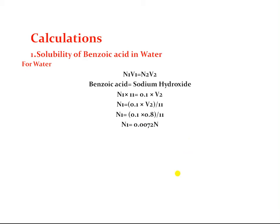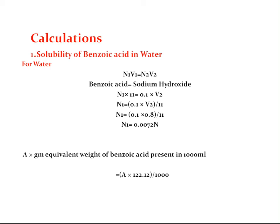To calculate solubility in grams per ml: use the formula A × molecular weight of benzoic acid divided by 1000, where A is the normality (gram equivalents per liter). A = 0.0072. Molecular weight of benzoic acid is 122.12. So solubility = 0.0072 × 122.12 / 1000 = 0.00088 g/ml. This is the solubility of benzoic acid in water at room temperature.